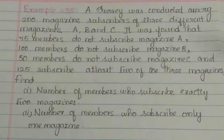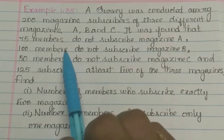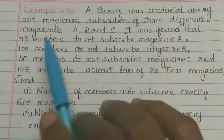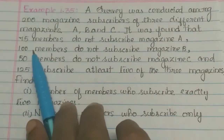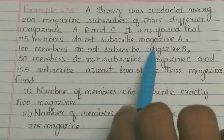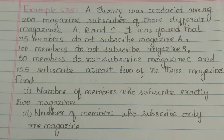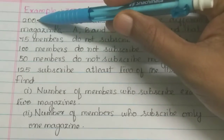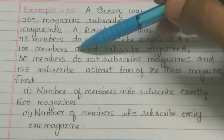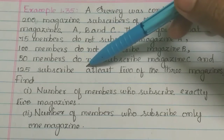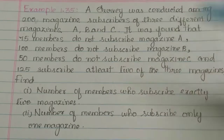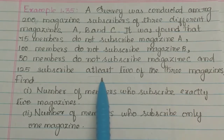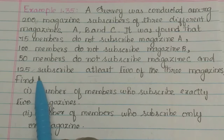It was found that 75 members do not subscribe magazine A, 100 members do not subscribe magazine B, and 50 members do not subscribe magazine C. And 125 subscribe at least 2 of the 3 magazines. At least 2 means a minimum of 2 and a maximum of 3 magazines.